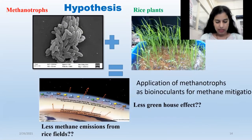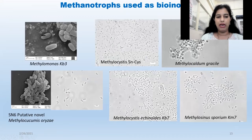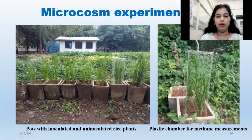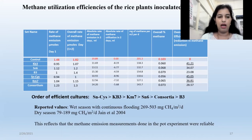Coming to applications, we tried an application where methanotrophs could be used as mitigation agents in rice fields. Our hypothesis was whether we can use them as bioinoculants in rice fields. For that, we chose different cultures isolated from Indian or western Indian rice fields — five or six cultures were used. We set up microcosm experiments where pots were inoculated with these bioinoculants or methanotrophs, and methane was measured. What we found was that in at least three cases, there was a considerable reduction in methane emission and an increase in methane oxidation capacity. We are in the process of repeating this experiment on a higher scale.